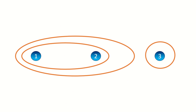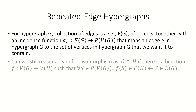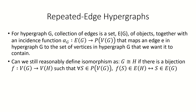Moving on, let's examine the case of hypergraphs where we allow for repeated edges. In a hypergraph with repeated edges, we can no longer identify edges solely from the set of vertices they contain. We can continue to define the collection of edges as a set of objects together with an incidence function, alpha sub G, that maps an edge E to the set of vertices we want it to contain. The first thing we should ask ourselves is: when we allow for repeated edges, can we keep the same definition as before for isomorphic hypergraphs and still satisfy our intuitive sense for what isomorphic hypergraphs should be?